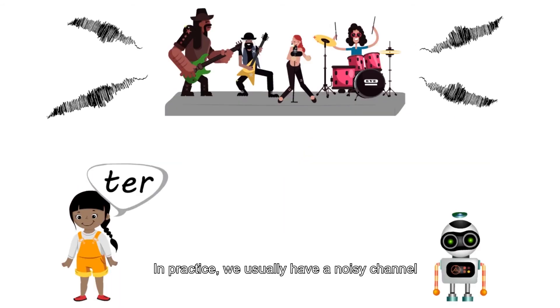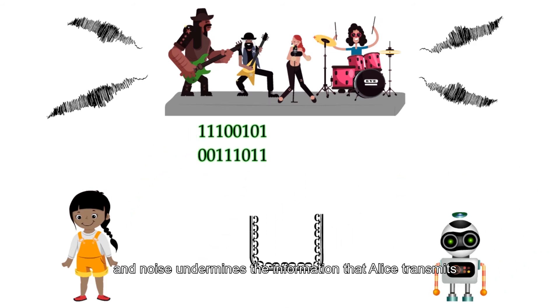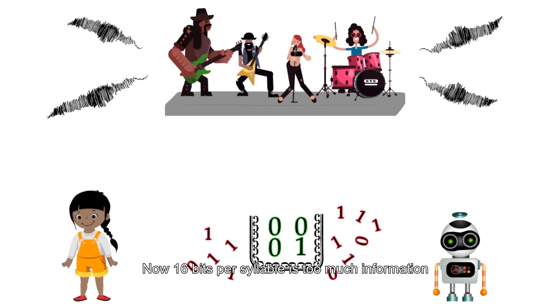In practice, we usually have a noisy channel. The noise in the background makes sounds indistinguishable and noise undermines the information that Alice transmits. Now, 16 bits per syllable is too much information for the transmission to Bob, that is, through our channel.